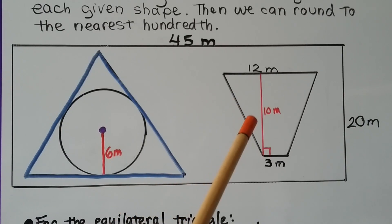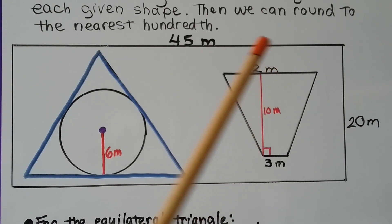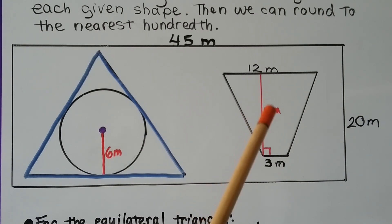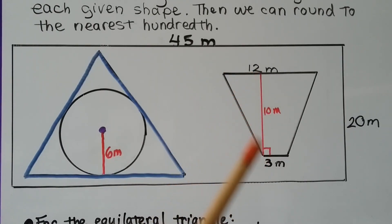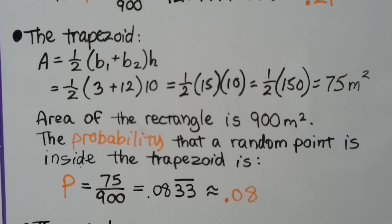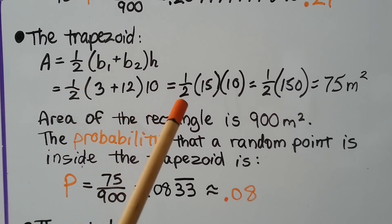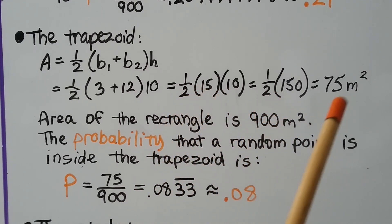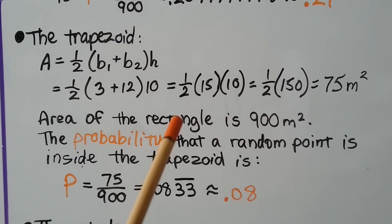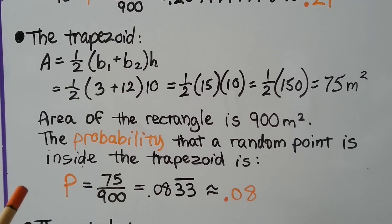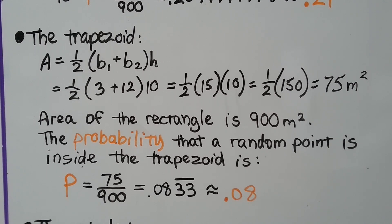Now let's find the probability the point is inside the trapezoid. The trapezoid has base 1 of 3 meters, base 2 of 12 meters, and a height of 10 meters. Area = ½ × (3 + 12) × 10 = ½ × 150 = 75 meters squared. With the rectangle area at 900 meters squared, the probability is 75 over 900, approximately 0.08.